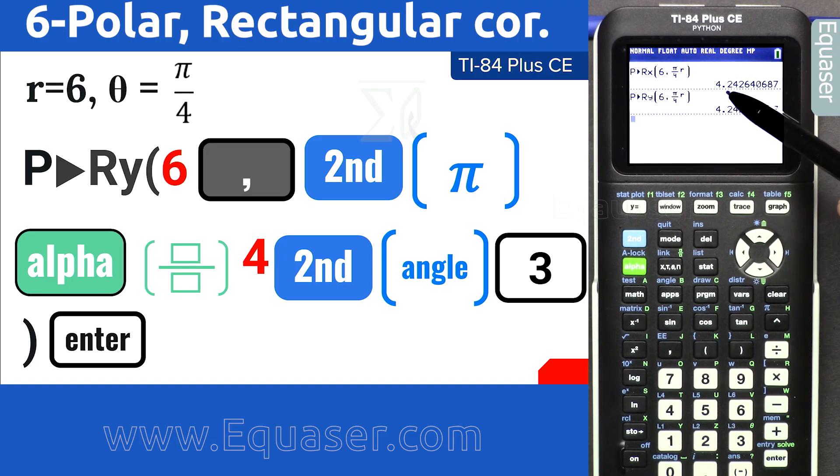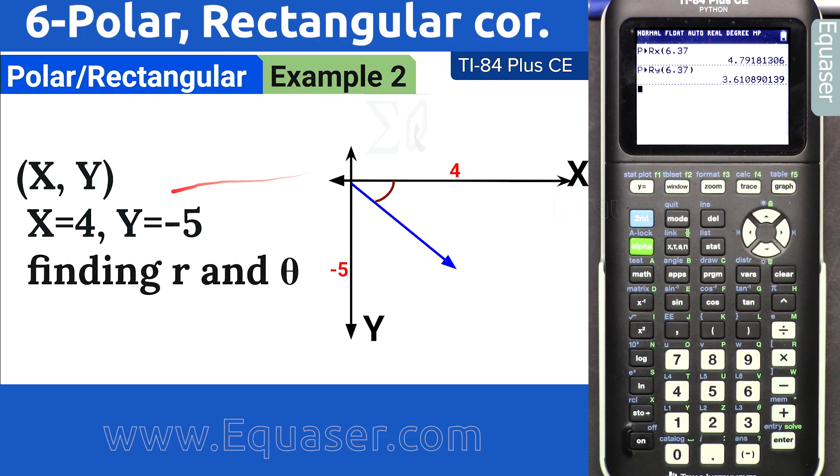Now example number two: we have x and y, and we want to get theta and r, the magnitude or length of this vector. You see, x is minus 5. This is below x-axis, and x is 4.